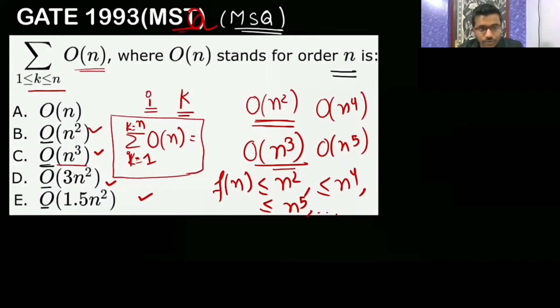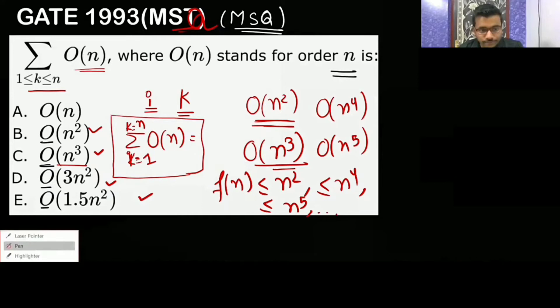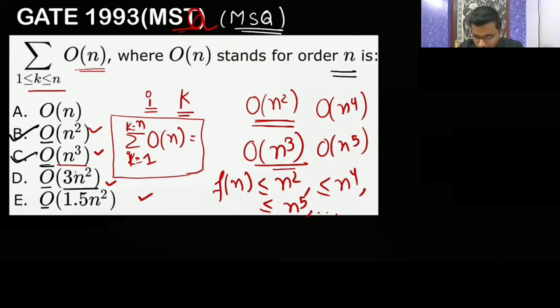Since it is n², it is also n³, and 3n² - the constant doesn't affect it, so it's also n². For 1.5n², we don't consider the constant, so it's again n² only. So B, C, D are correct.